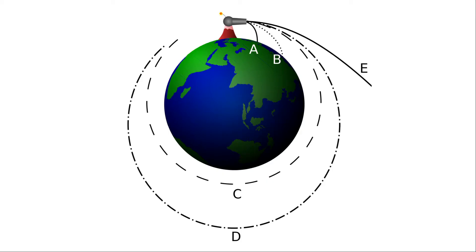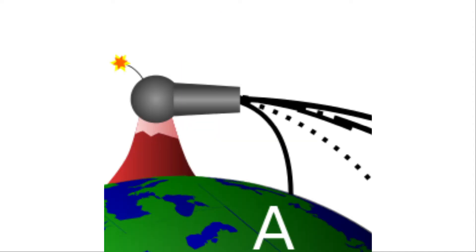In order to explain how an orbit works, we will do a classic thought experiment called Newton's Cannonball. For this experiment, we will pretend that there is no air, or that we are above the atmosphere. We have a cannon on top of a mountain, and we also have the ability to set the cannon's muzzle velocity to whatever we choose. If we fire the cannon at a normal velocity, the cannonball flies forward and gravity pulls it downward.